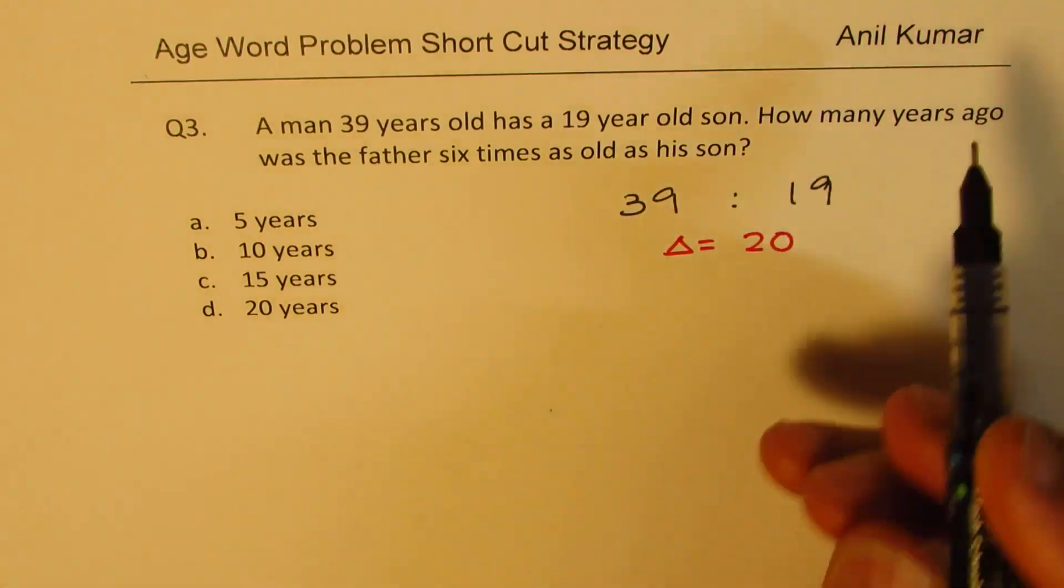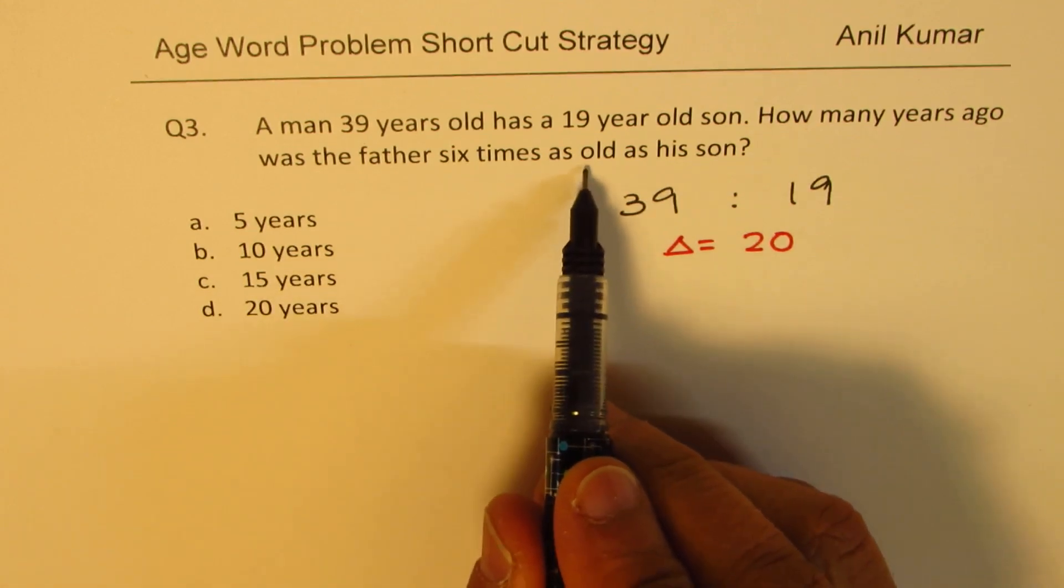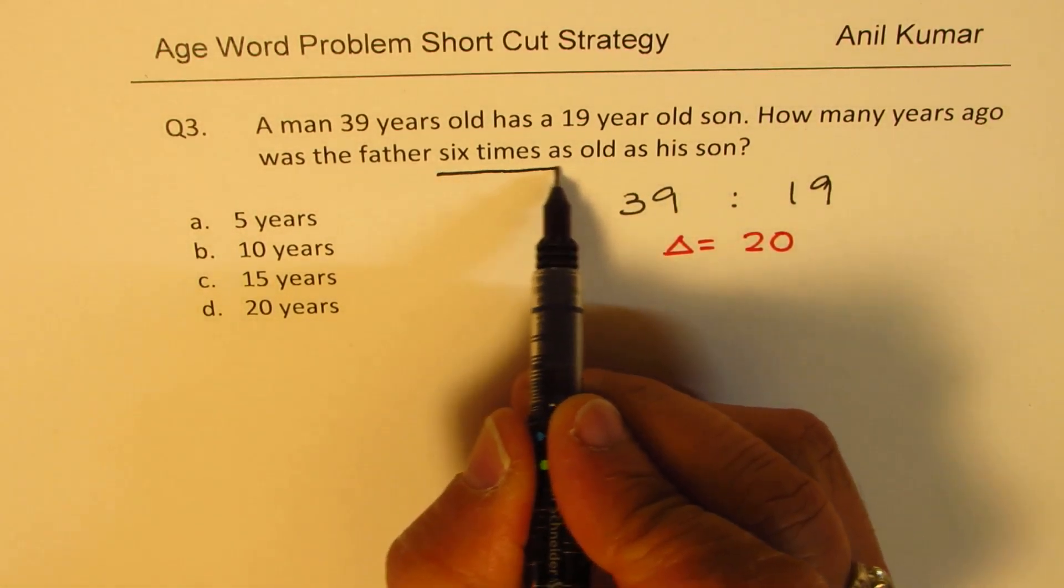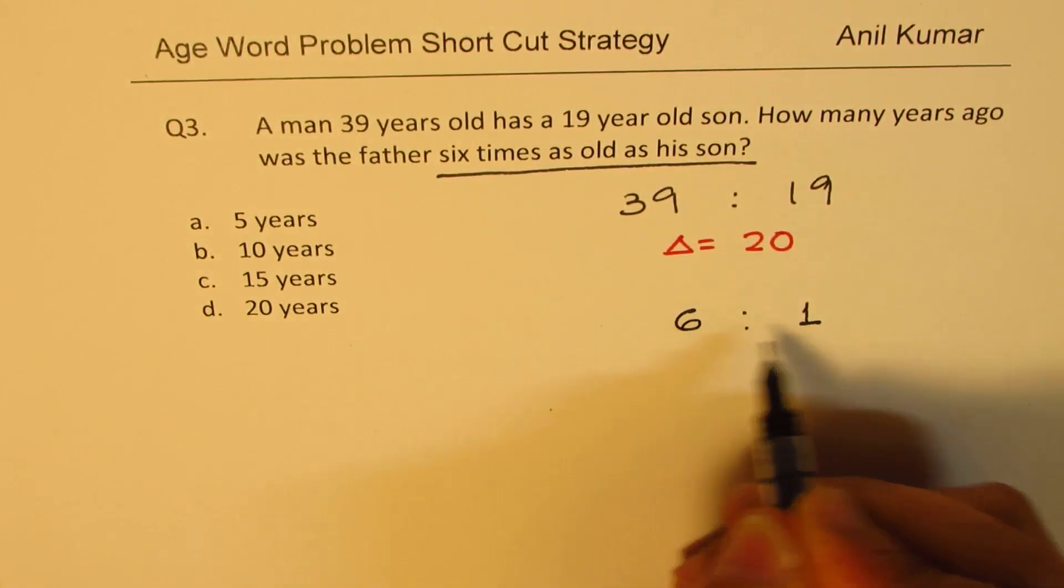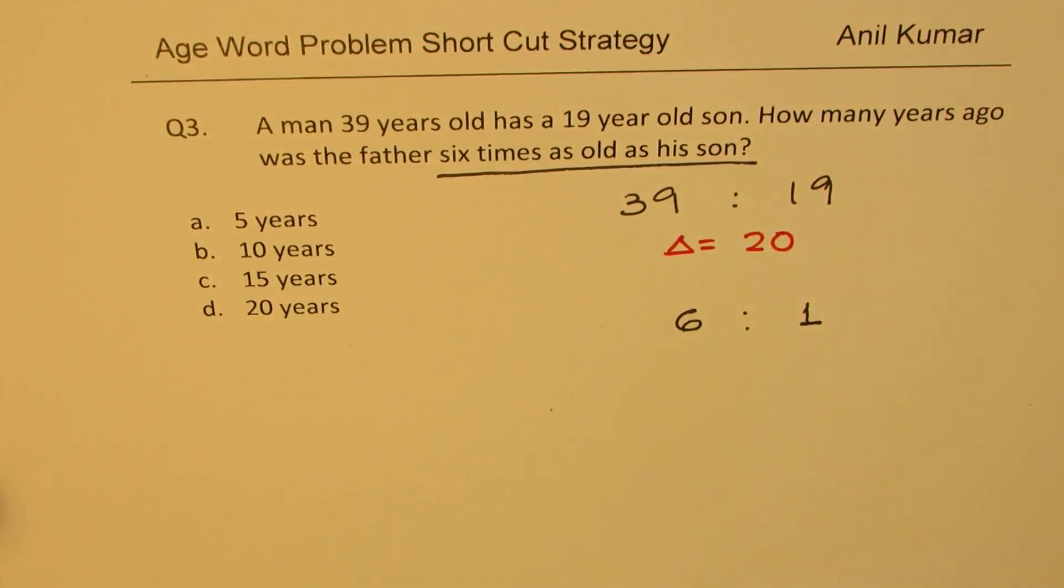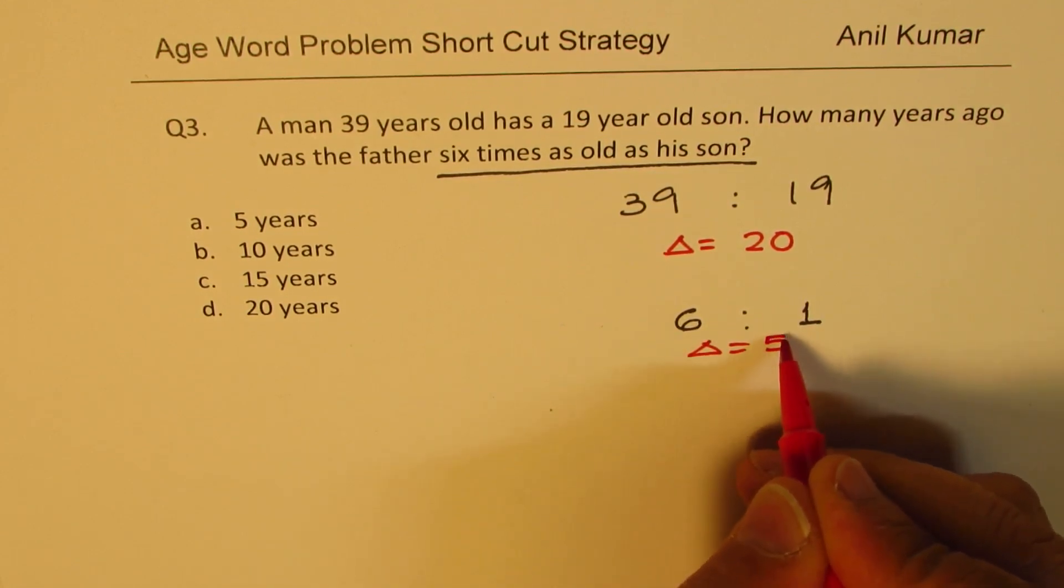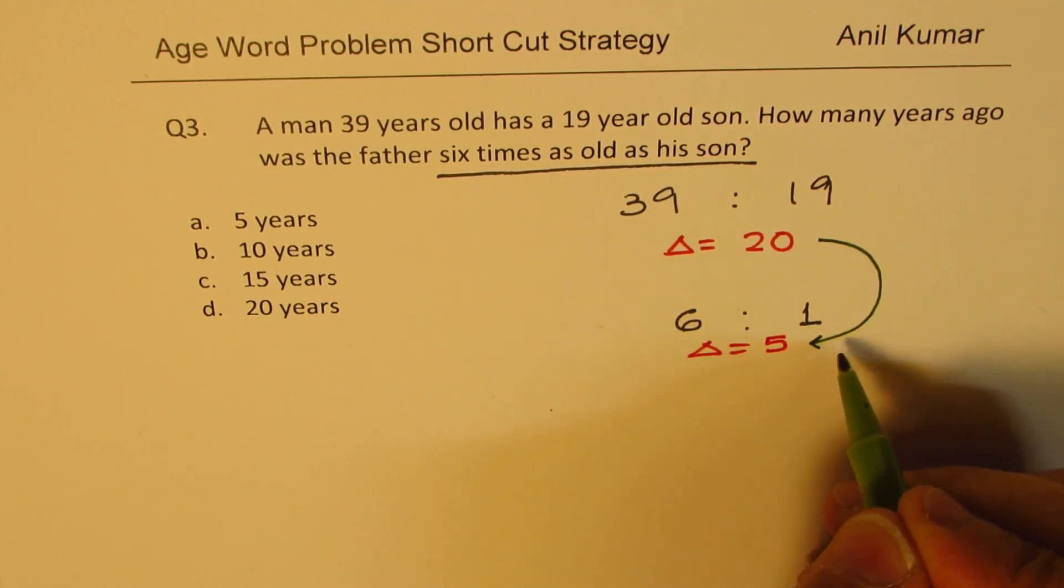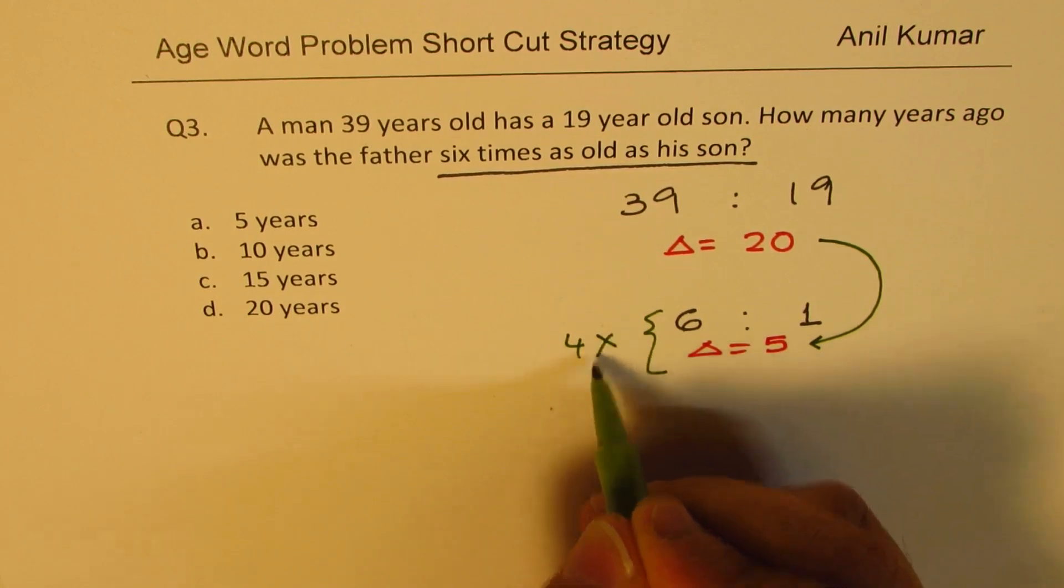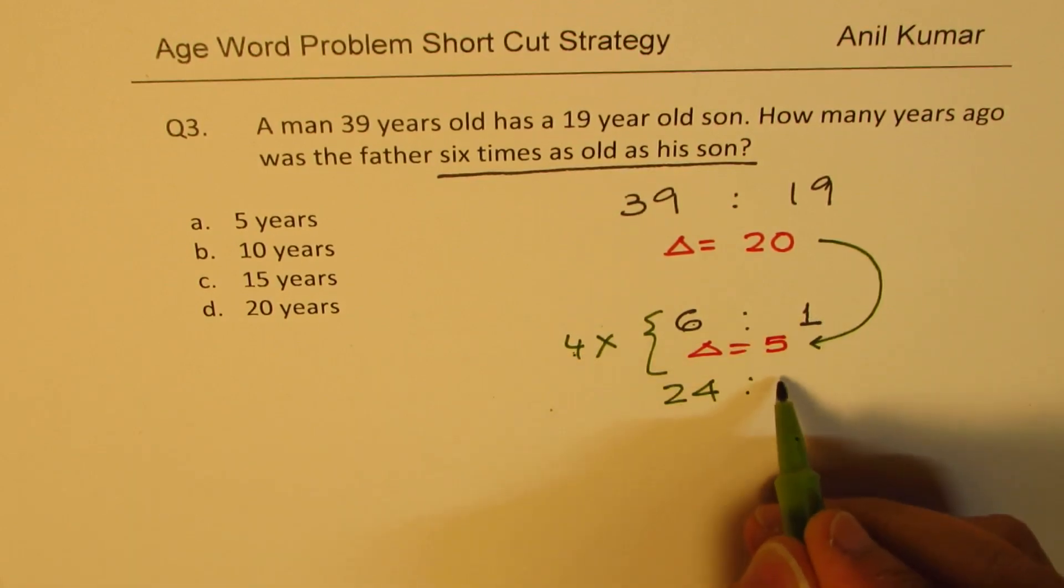How many years ago, so they will be younger, was father 6 times old. So this is like tricky. 6 times older than his son. That means, let me take this as 1 and this as 6. I could have taken any number, but 1 and 6 make sense. But this is a difference of how much? 6 minus 1 is 5. But I want a difference of 20. How do I get 20? This number should be multiplied by 4. So if I do that, 6 times 4 is 24, and 4 times 1 is 4.